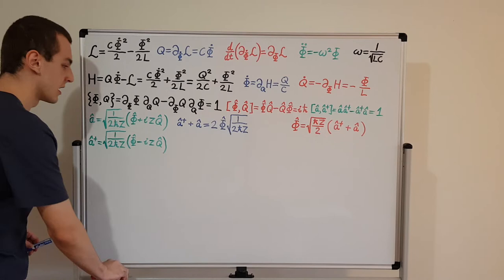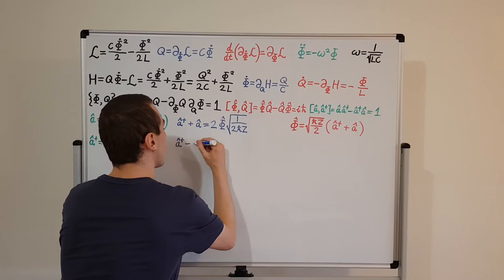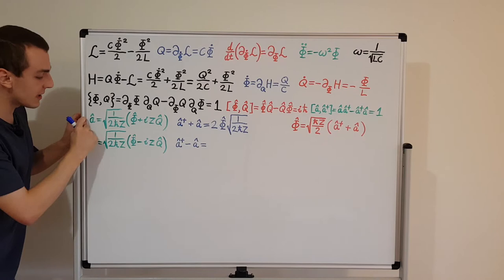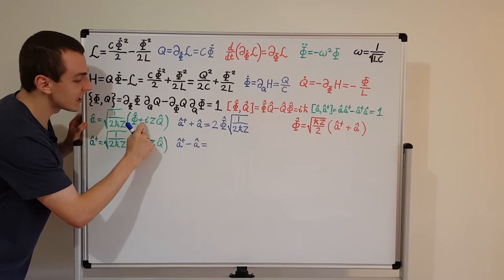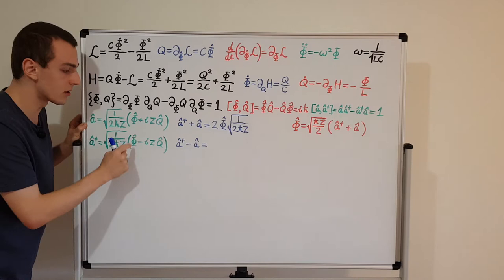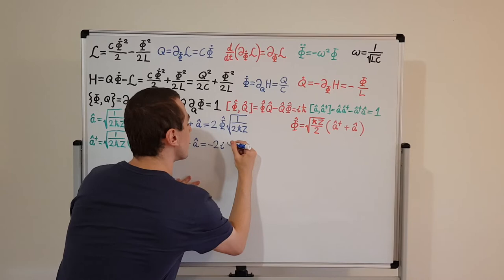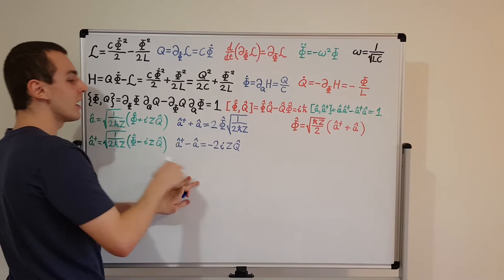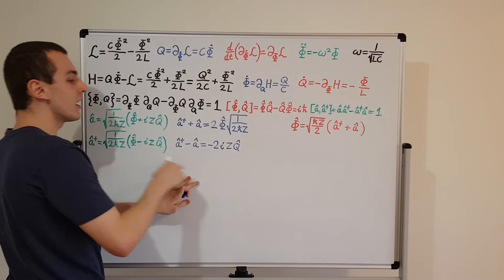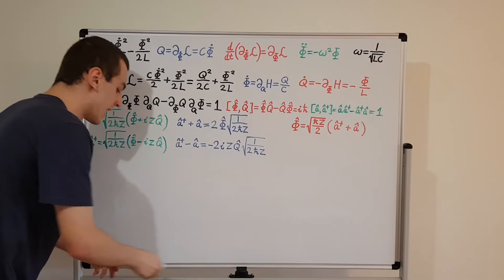Now let's take the difference a dagger minus a. Subtracting introduces a minus sign to a, giving minus phi here and a minus in front of i. So the phi terms cancel, and we have two copies of the remaining term: minus 2i Z Q, multiplied by the square root of 1 over 2 h-bar Z.